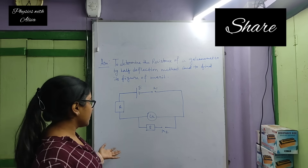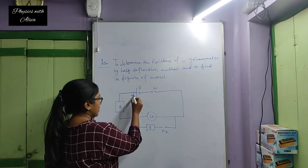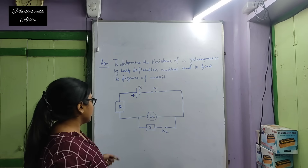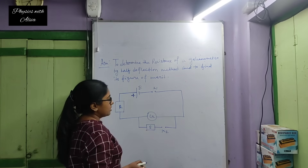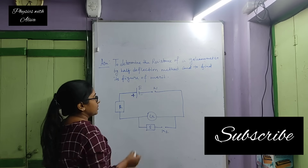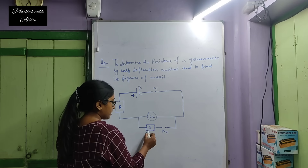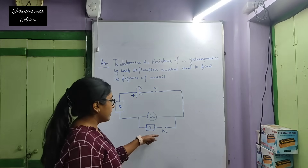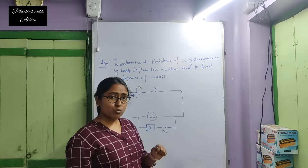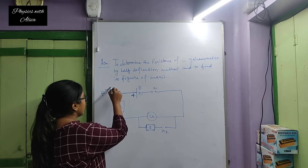Now see the circuit diagram. This is our battery. The positive terminal of the battery is connected with the resistance R, and the other end of the resistance R is connected with the galvanometer. The galvanometer is also connected with key K1, and the other end of key K1 is connected with the negative terminal of the battery. Another resistance S is connected in parallel with the galvanometer, and another key K2 is there. The resistance R is greater than the resistance S.